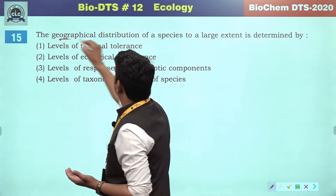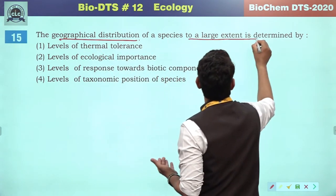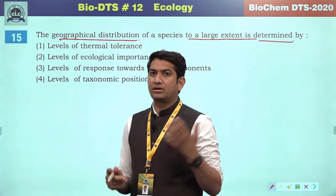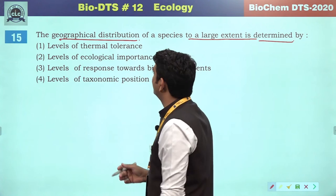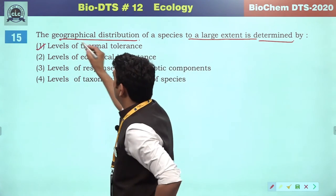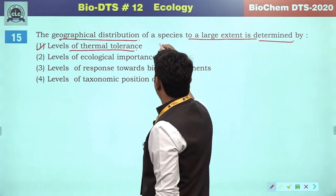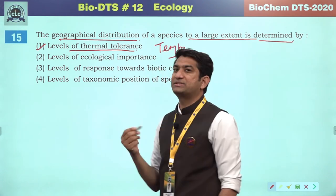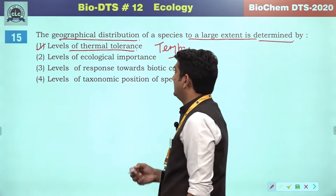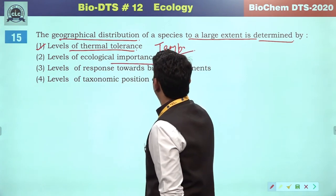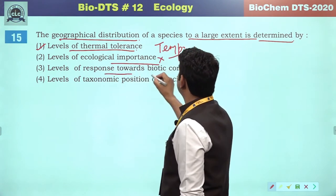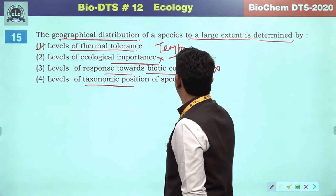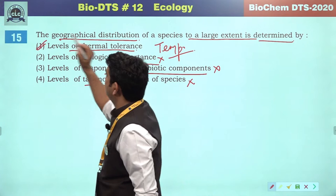The geographical distribution of a species to a large extent is determined by the level of thermal tolerance. Temperature is the most important and ecologically relevant aspect to the distribution of living organisms. It is not the level of ecological importance, nor the response towards the biotic component, nor the level of taxonomic position. So the correct answer will be the first option.